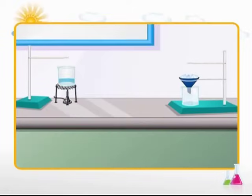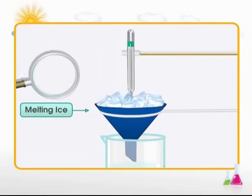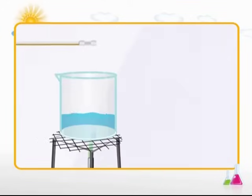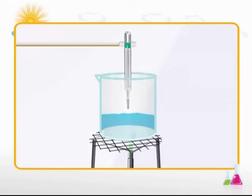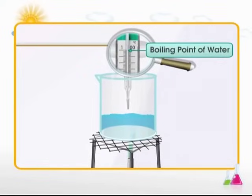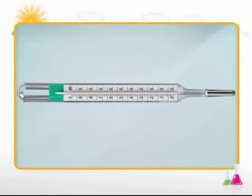Let's now learn to calibrate a thermometer. First, place the thermometer in ice and mark the melting point of ice — that is zero degrees Celsius — as the lower fixed point of the thermometer. Next, place the thermometer in boiling water such that it does not touch the boiling water, so that it shows the temperature of the steam. The boiling point of water, that is 100 degrees Celsius, is marked as the upper fixed point. The separation between these two fixed points is divided into 100 equal divisions, each representing a temperature difference of 1 degree Celsius.